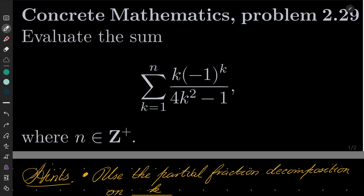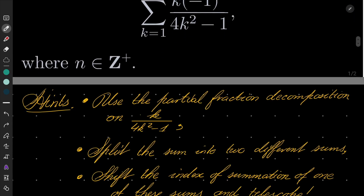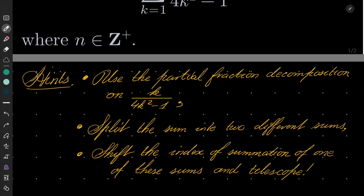My hints for this problem: use the partial fraction decomposition on the fraction k over 4k squared minus 1. If you don't know about this method, look it up on Wikipedia or stick with me — I will demonstrate it. Then after this decomposition, split the sum into two different sums, shift the index of summation of one of them to make them almost the same, and use telescoping. Give this problem a try and I will see you in a minute.